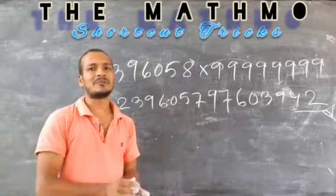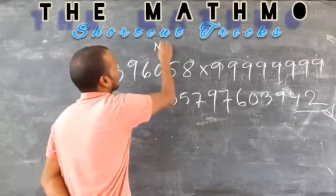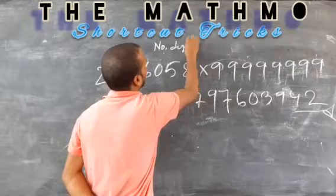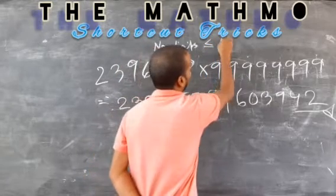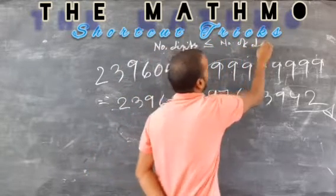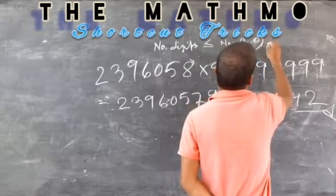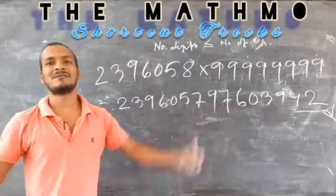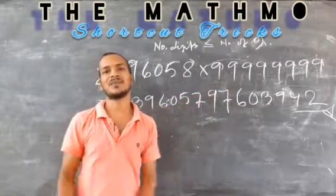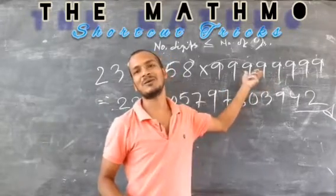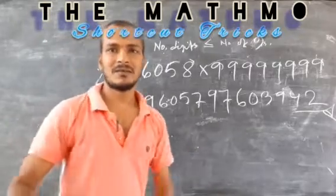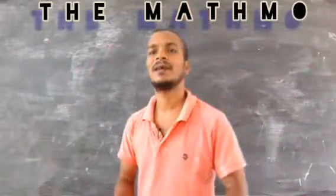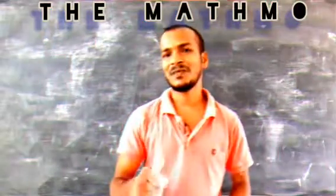So when can you apply this process? The number of digits in this number should be less than or equal to the number of 9s in that number, and that number should contain only 9s. Then we can apply this process. Please press the like button and subscribe to the channel. Thank you for watching.